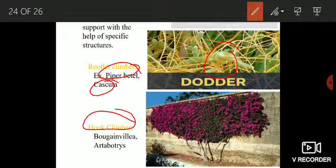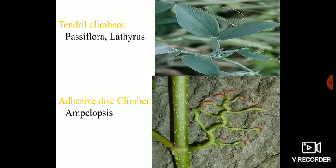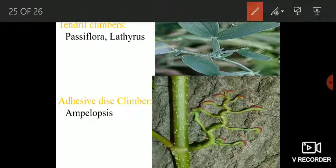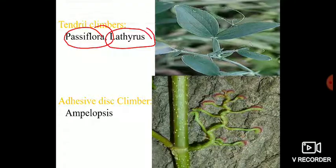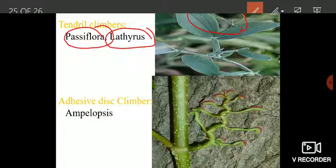One more type is tendril climbers — those plants which climb through a support with the help of tendrils. Tendrils are actually modifications of leaves; the leaves get modified into tendrils and these tendrils help the plants to climb. Examples are Passiflora and Lathyrus. You can see Lathyrus with its tendrils here.